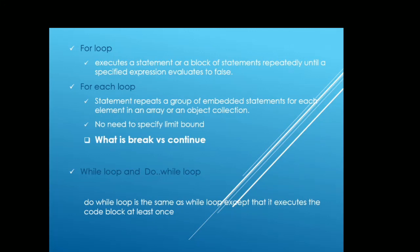We have for loop, foreach loop, while loop, and do-while loop. Talking about the for loop: the for loop executes a statement or a block of statements repeatedly until a specified expression evaluates to false. That means you can specify a starting point, ending point, and the increment — the number of hops you want to perform while iterating. In case of foreach loop, you have to specify the collection that you want to iterate. In case of foreach, we don't have to specify the hop count or incremental count.